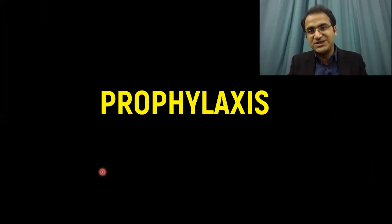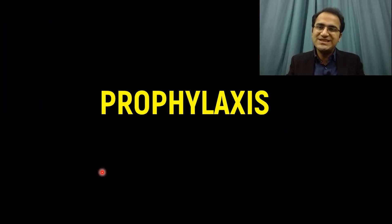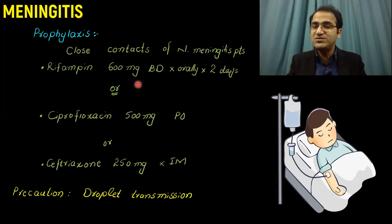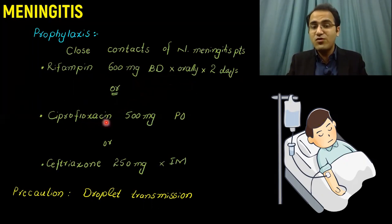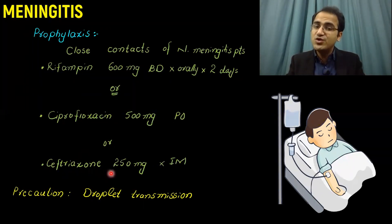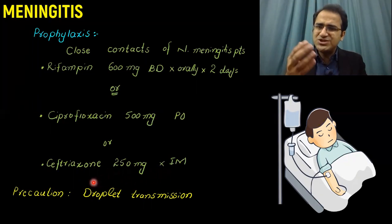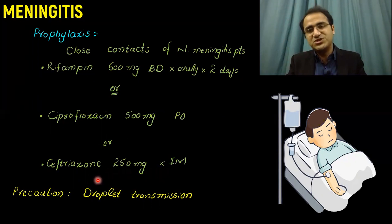For prophylaxis of close contacts of meningitis patients: give rifampin 600mg twice daily orally for two days, OR ciprofloxacin 500mg orally, OR ceftriaxone 250mg IM. Since transmission is via droplets, all appropriate droplet precaution measures should be taken.